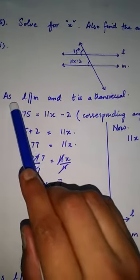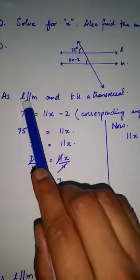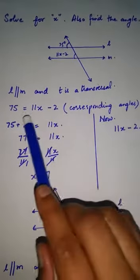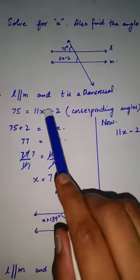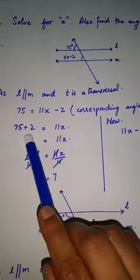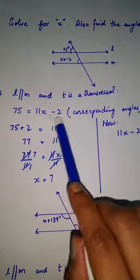You have to write: line l is parallel to m and t is a transversal. So 75 degrees equals 11x - 2. These are corresponding angles. When you add 2 on both sides,